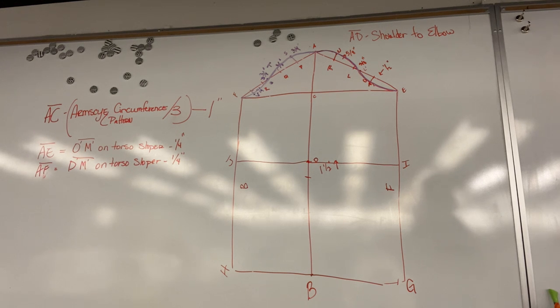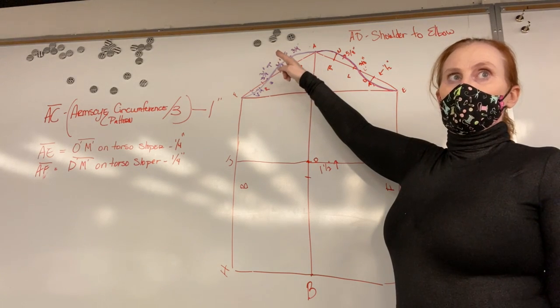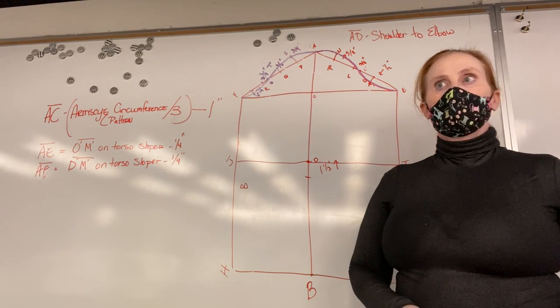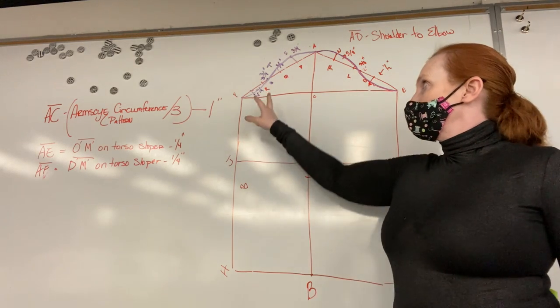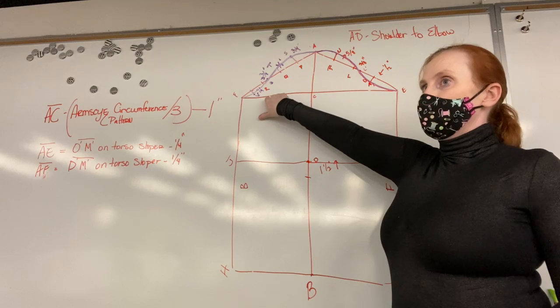What? T again? T is straight out from Q, 3 eighths of an inch. Okay. V is the halfway point, halfway between here. Quarter inch down. Yep, quarter inch down into the sleeve.